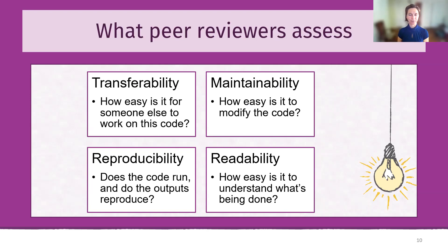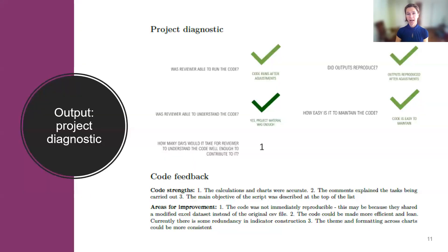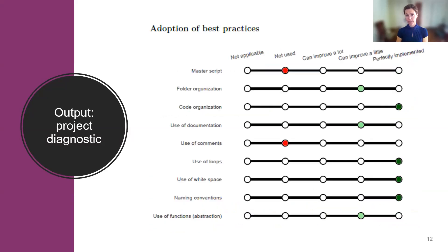Peer reviewers assess four main areas: transferability — how easy is it for someone else to work on the code; maintainability — how easy is it to modify; reproducibility; and readability. At the end, projects receive a standardized diagnostic about which standards their code meets, which practices have been adopted, and where there are areas for improvement.